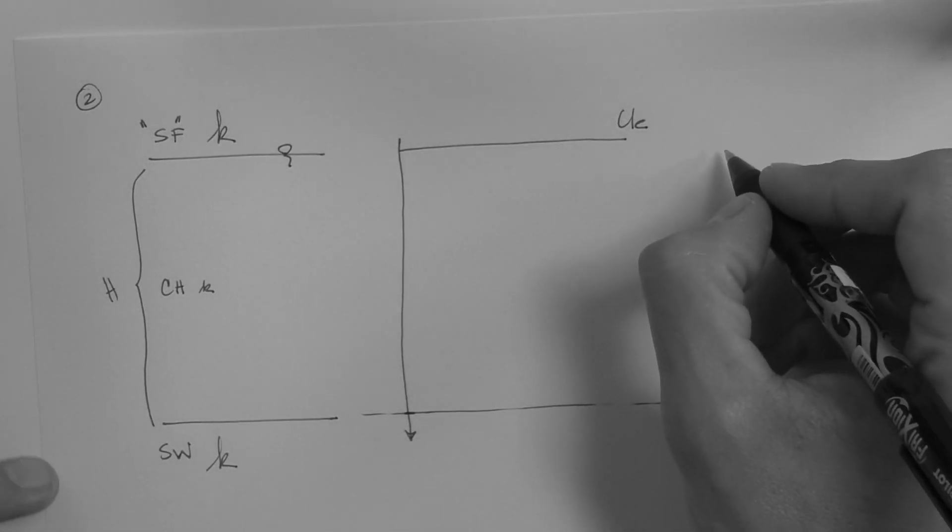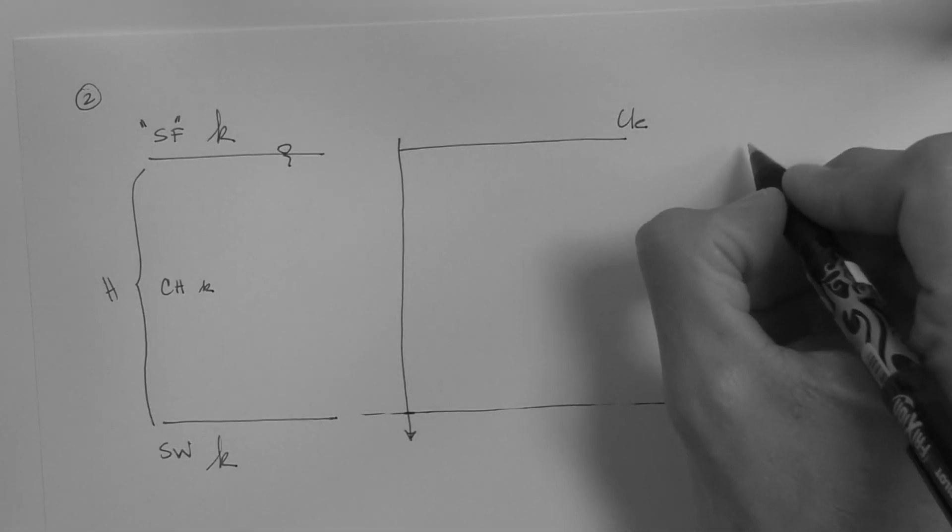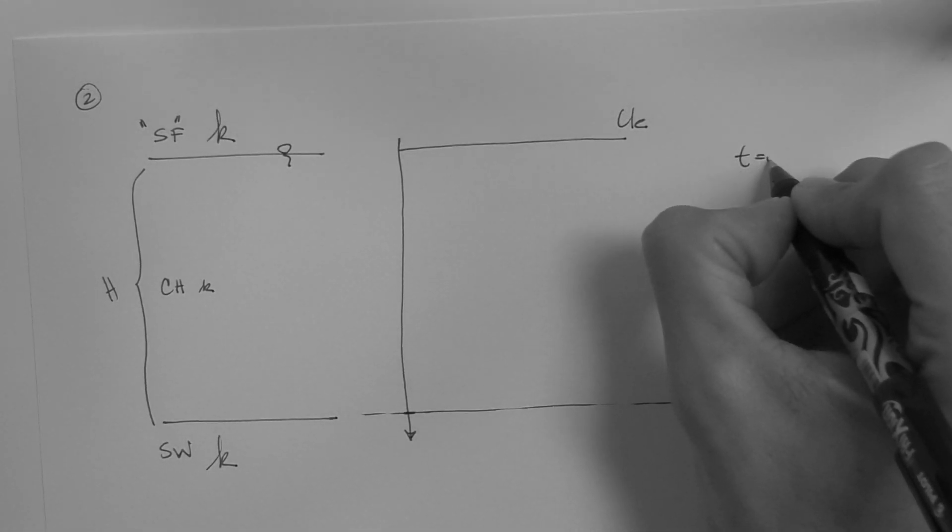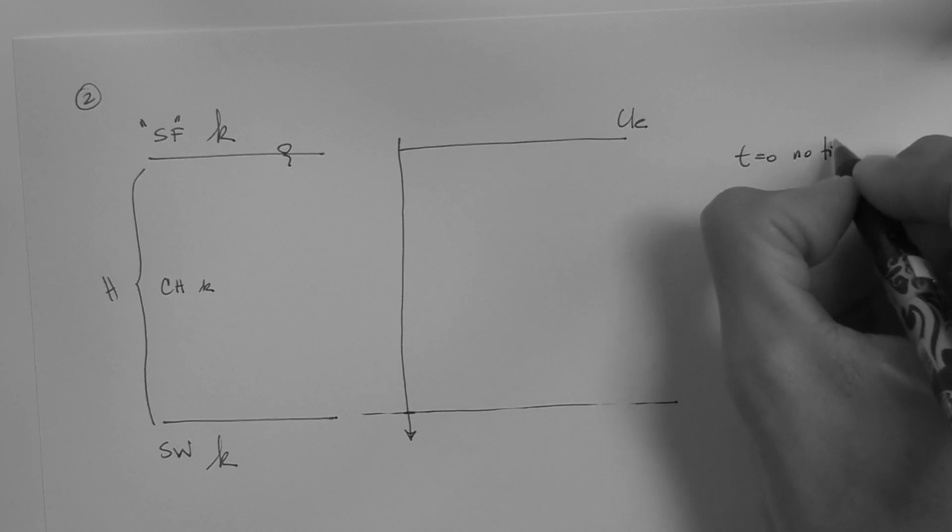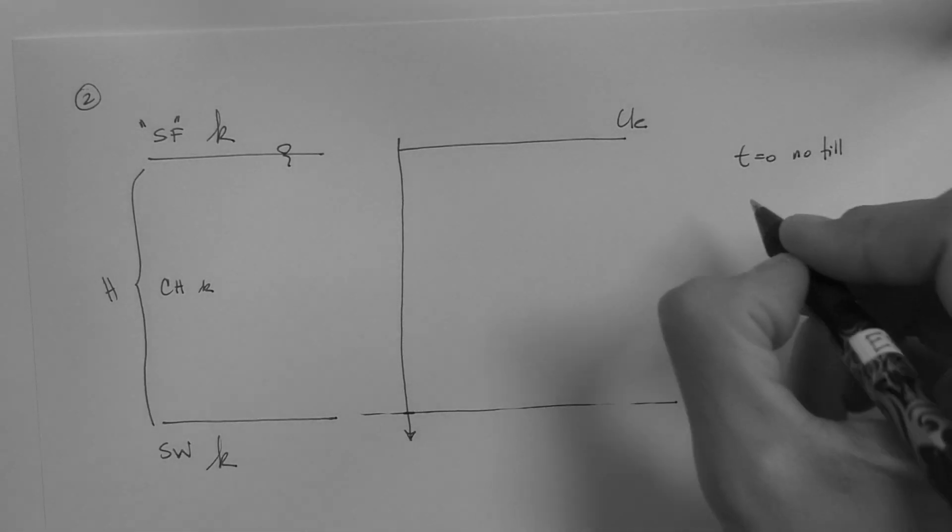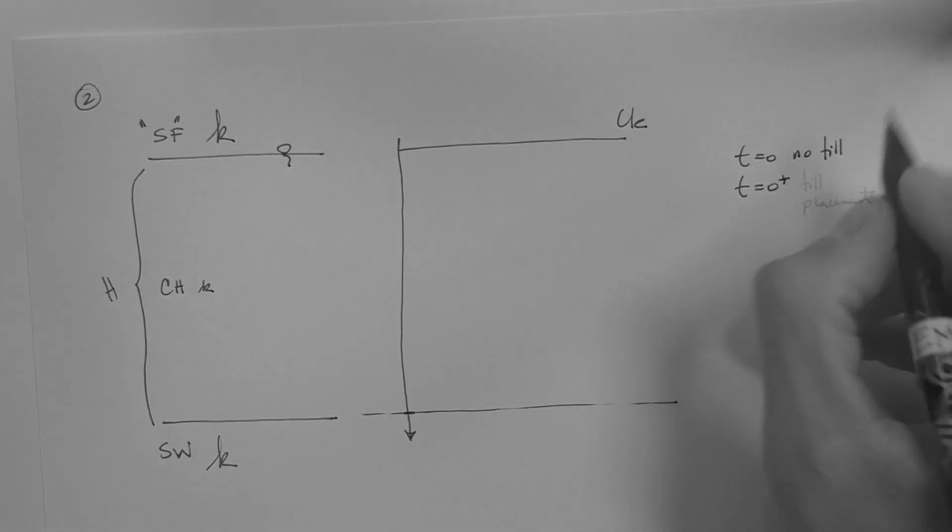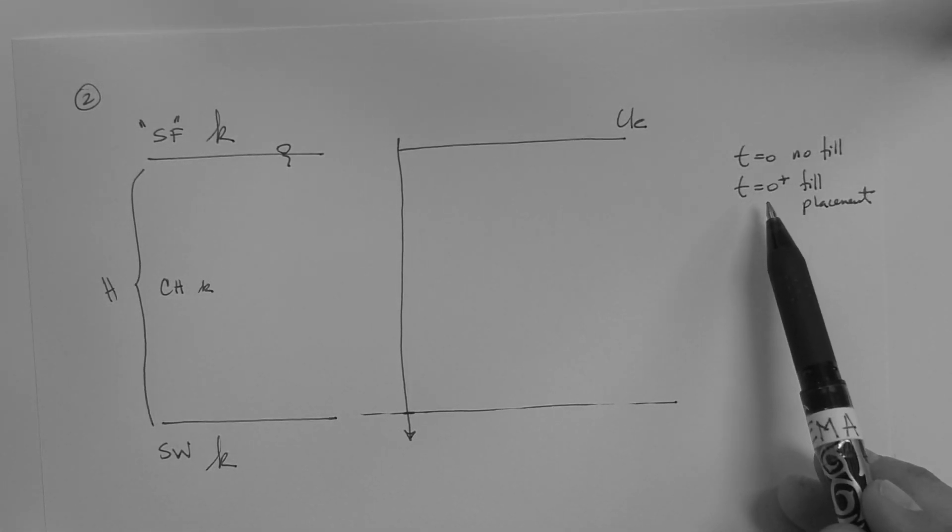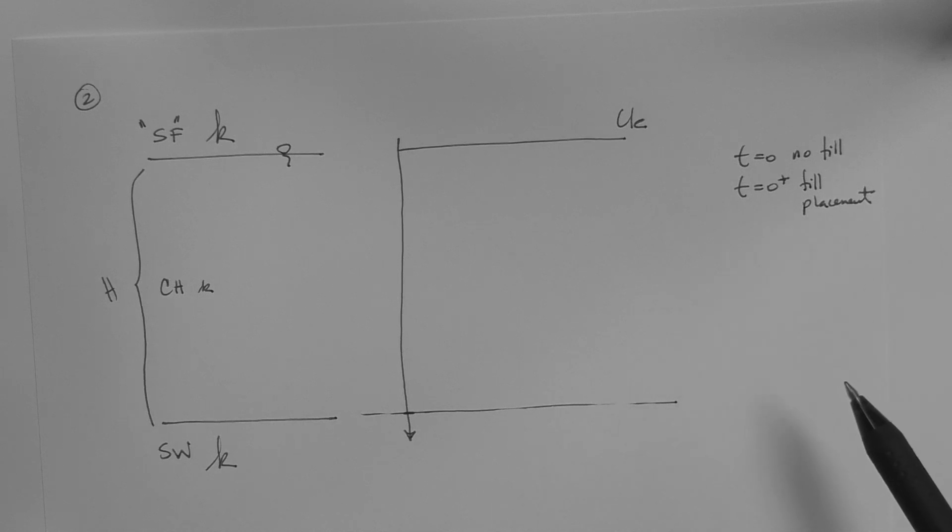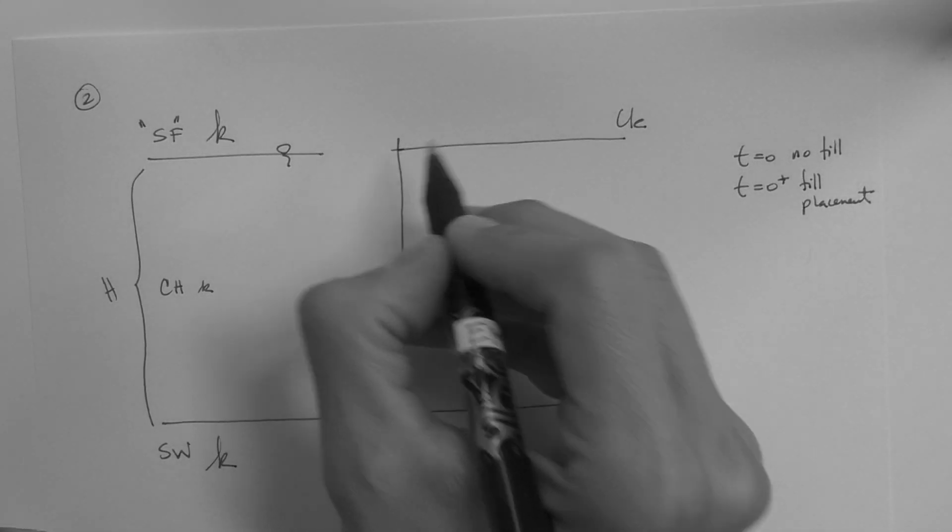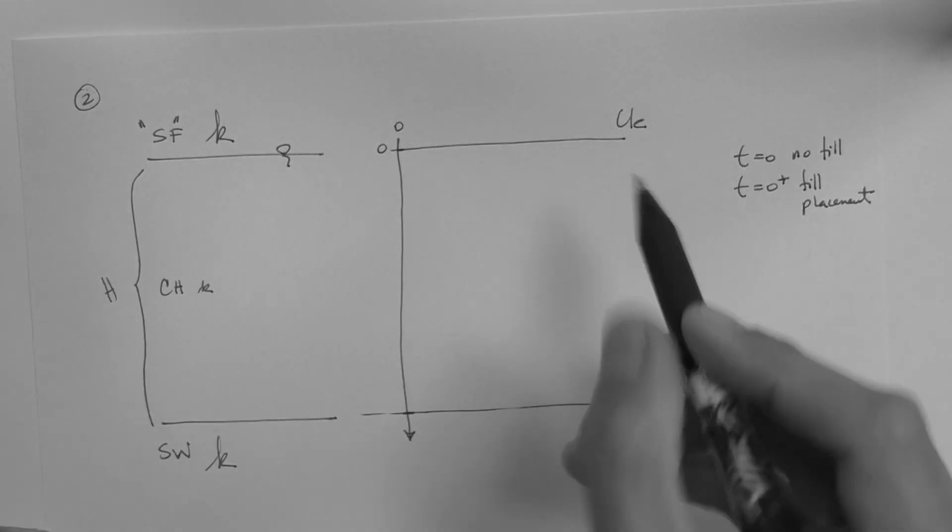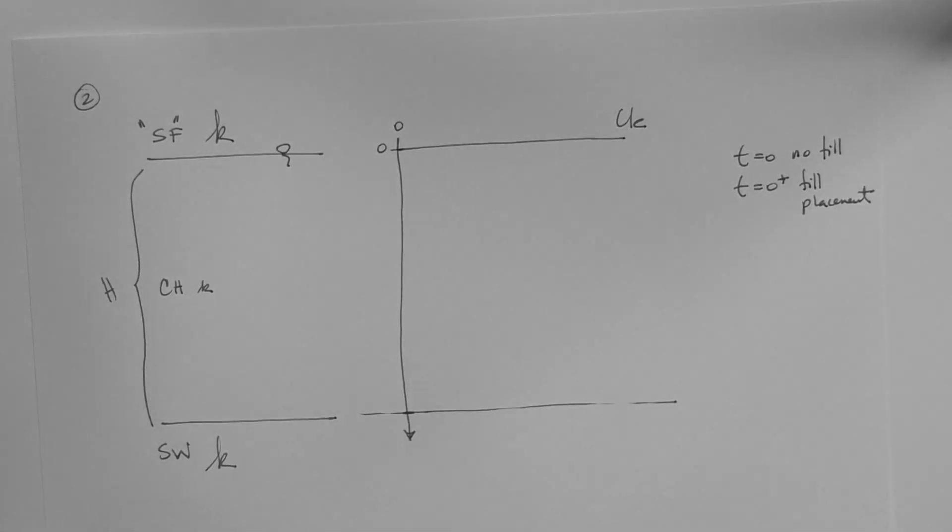Recall that the clay layer is obviously saturated. Now, we have to specify a few times here. Time equals zero means that there is no fill, no load. Time equals zero plus, that is the moment where the load or fill is placed. At time equals zero, the excess pore pressure at any point along the depth of this layer is equal to zero.